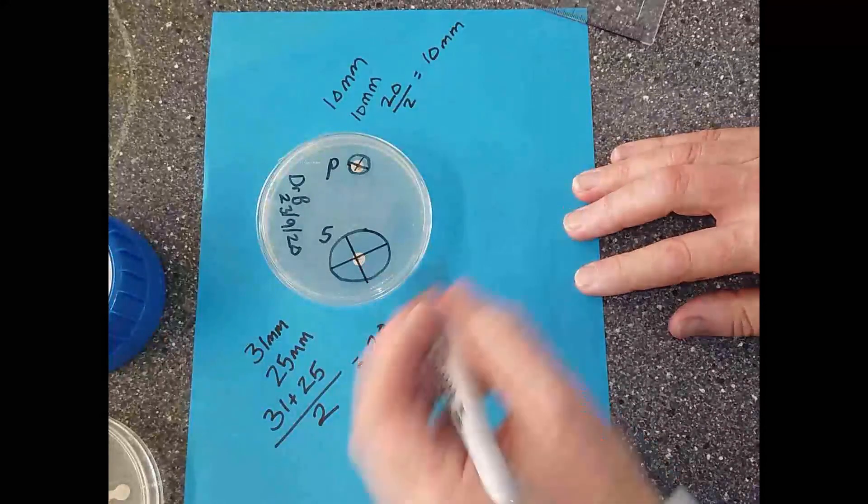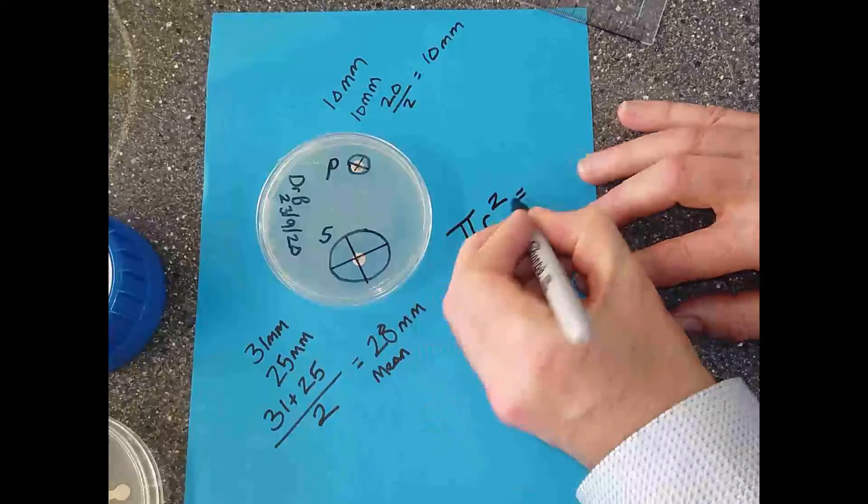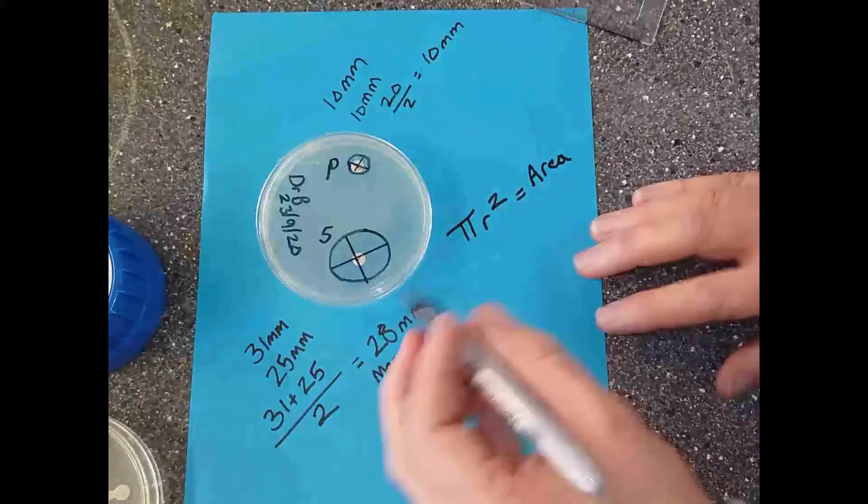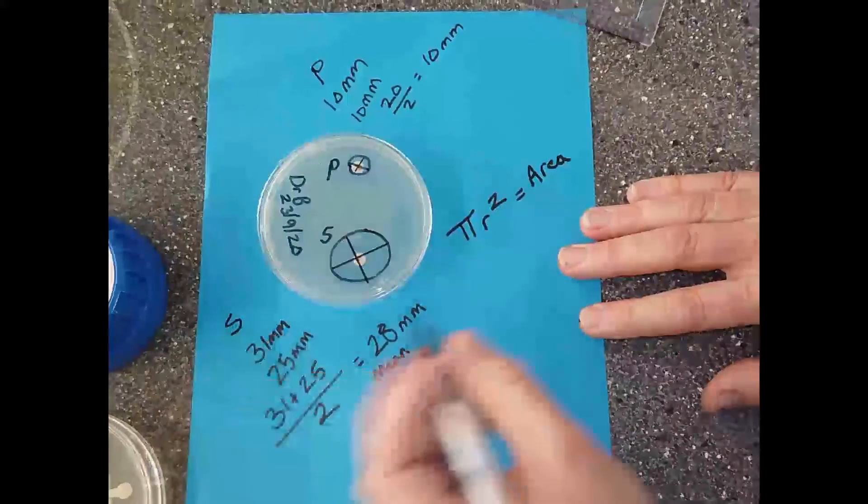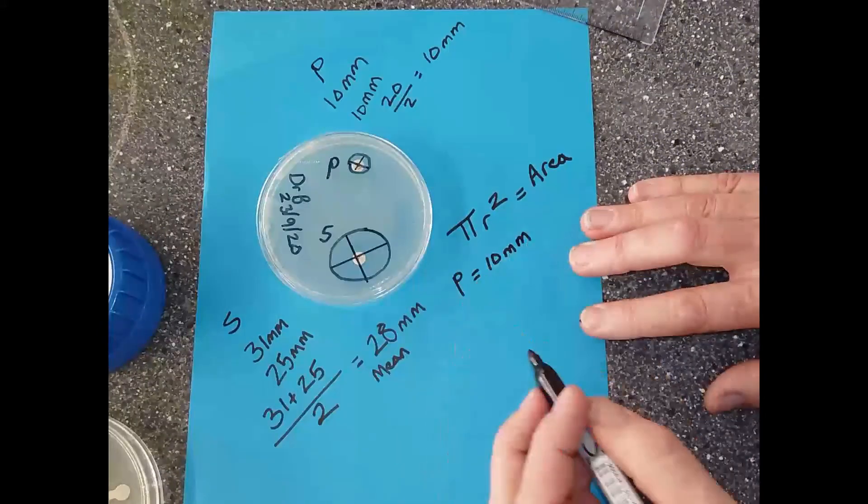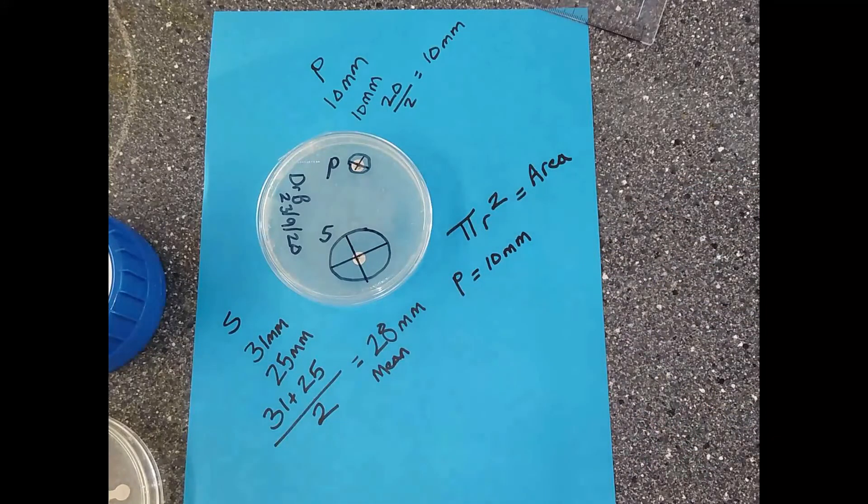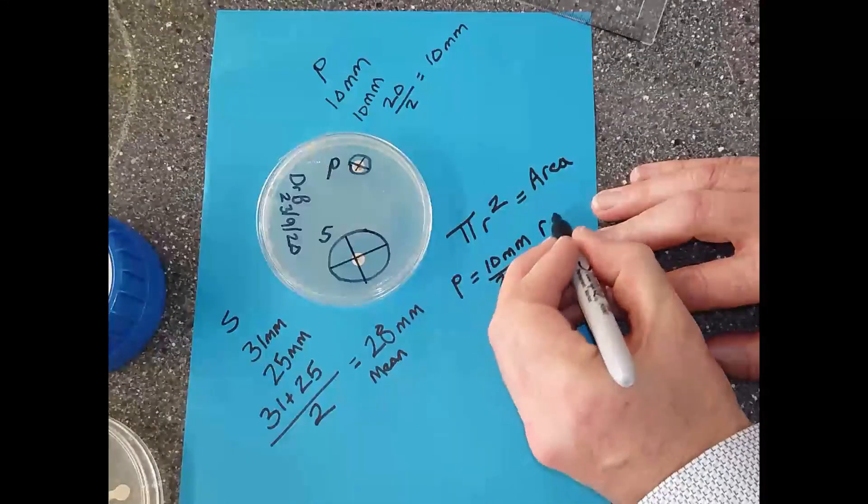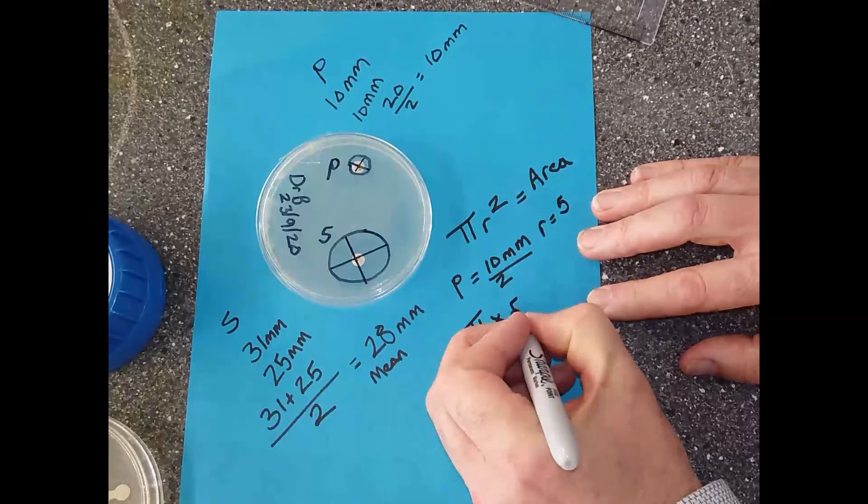We can now work out the area of the circle. You need to take pi r squared, and that will give us the area of the circle. Let's use penicillin. Penicillin is 10 millimeters. To find the radius, you divide it by two, so radius equals 5. So I do pi times 5 squared and that will give me my answer.